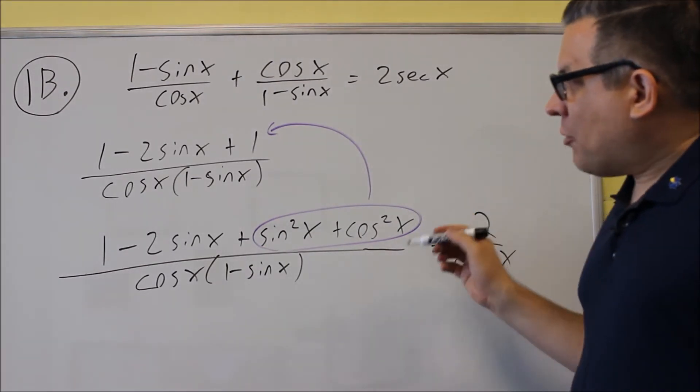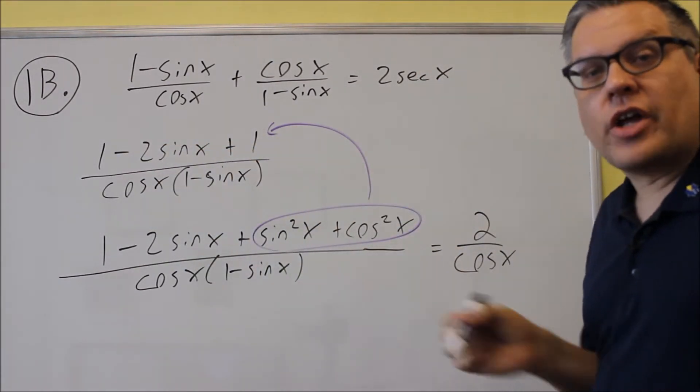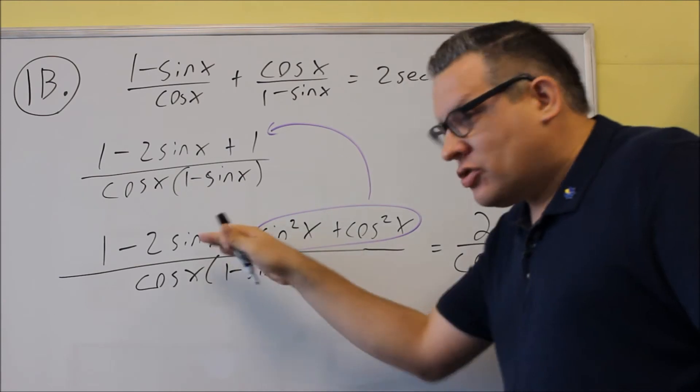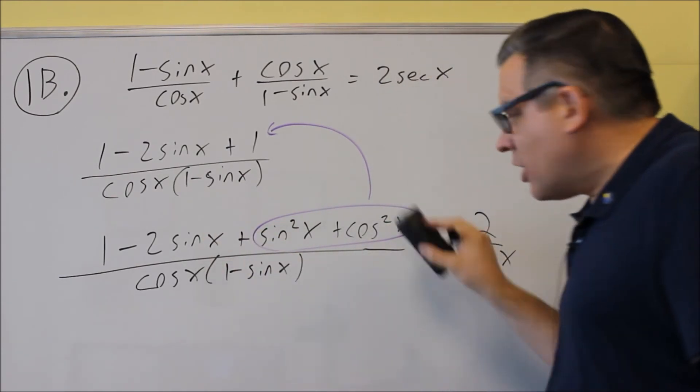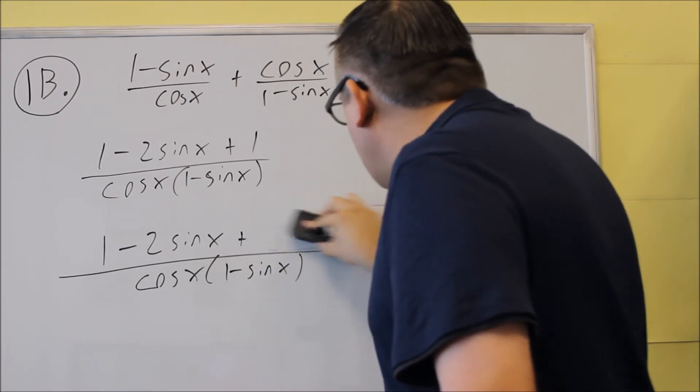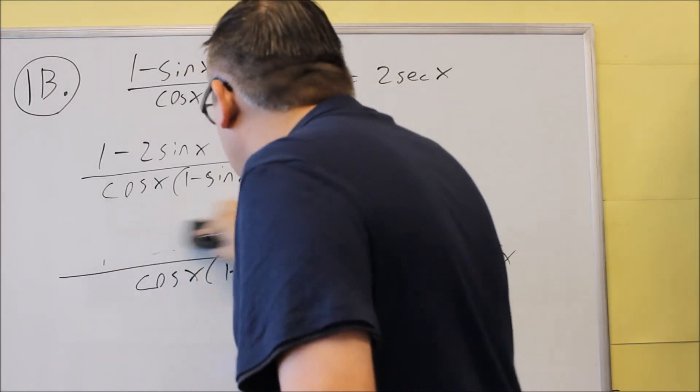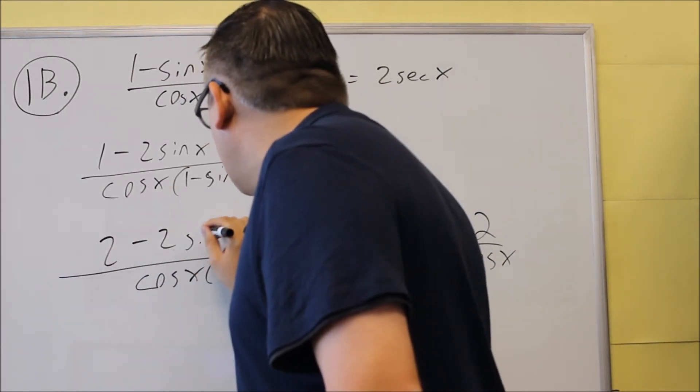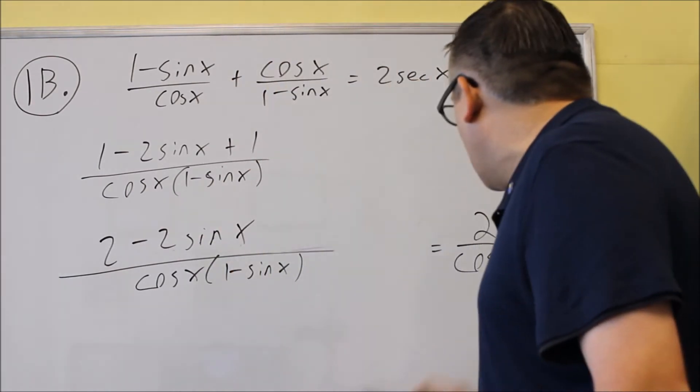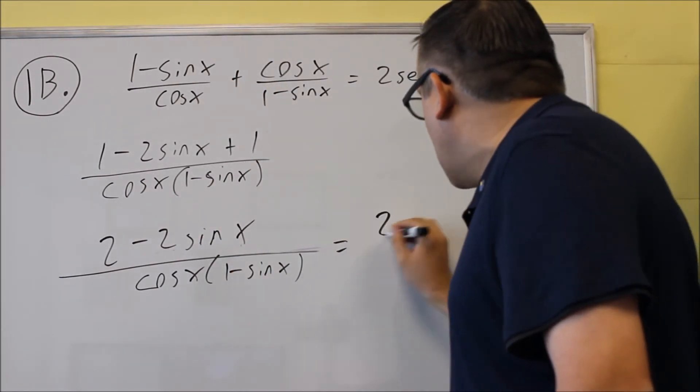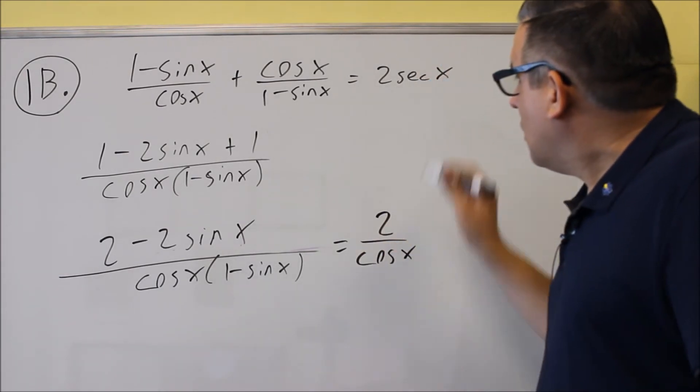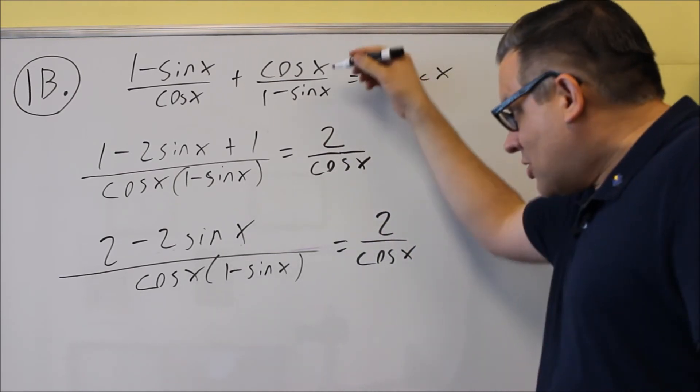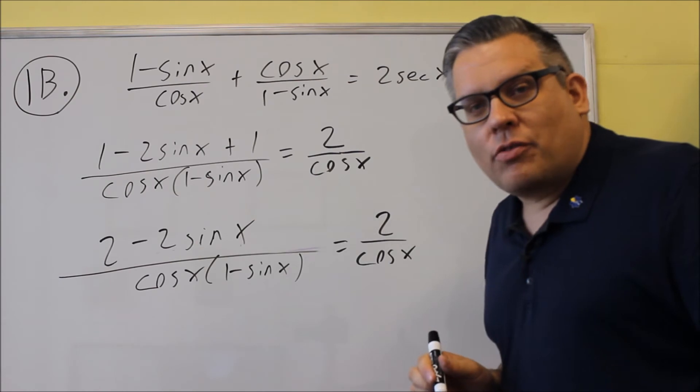Now, for this problem, both of these are going to be like terms. So we can add the 1 and the 1 together, and that's going to give us a 2. This top part now is equal to 2 minus 2 sine x. If we're still trying to make this equal to the right-hand side, the right-hand side I'm not going to do anything with. I'll keep that as 2 over cosine, which I should have written here as well. You want to keep that same thing all the way down as you do your proof.